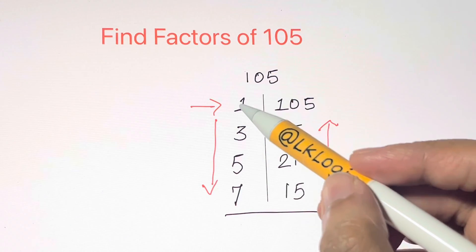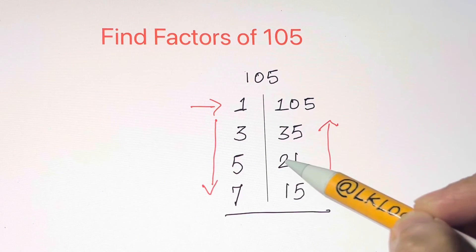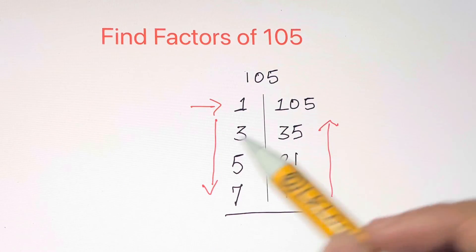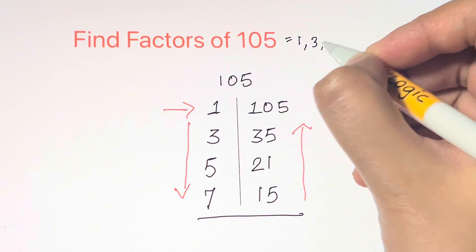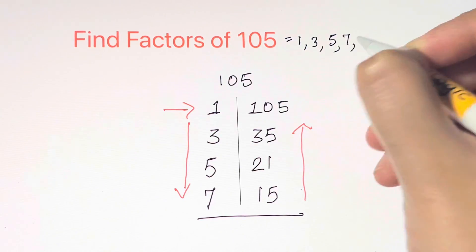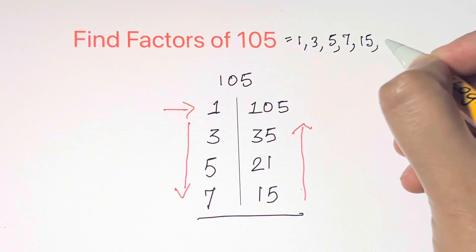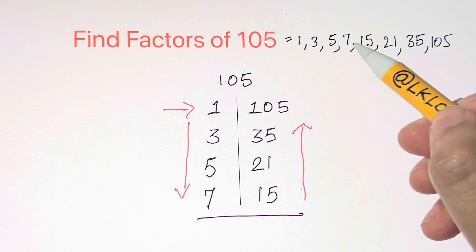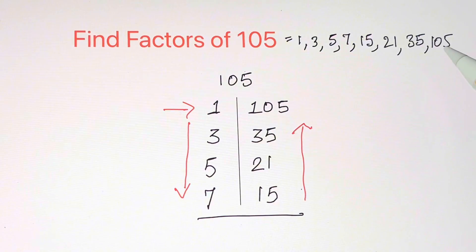So therefore, how many factors are there? 1, 3, 5, 7, 15, 21, 35, 105. Count: 1, 2, 3, 4, 5, 6, 7, 8. Total of 8 factors, what we have got.